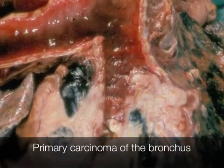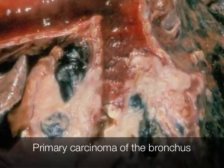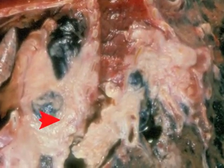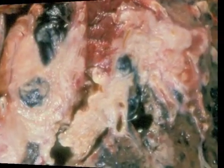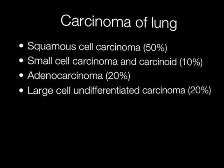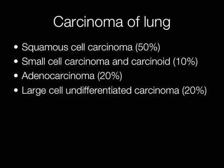The white mass is a primary carcinoma of the bronchus. Approximately 50% of lung cancers are squamous cell carcinomas. Other types include small cell carcinoma, carcinoid, adenocarcinoma and large cell undifferentiated carcinoma.